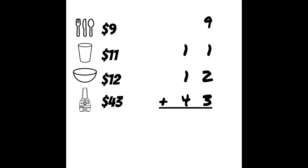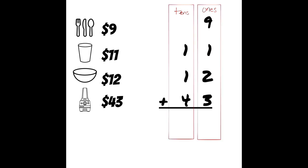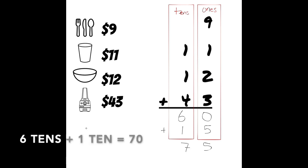But there's another way. I can take my numbers and put them all together in one number model and think about the different places. This column is the ones place and this column is the tens. Looking at the tens column: four plus one plus one is six, and six tens is sixty. Now looking at the ones: nine and one makes ten, eleven, twelve, thirteen, fourteen, fifteen — I have fifteen ones, which is one ten and five ones. So sixty plus ten gives me seventy, plus five ones is seventy-five dollars. Both ways show the total for all of these items is seventy-five dollars.